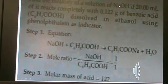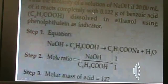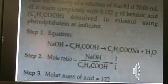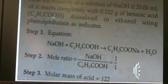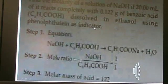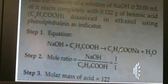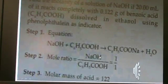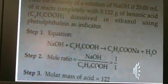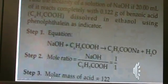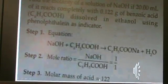Find the molarity of solution of NaOH if 20 mL of it reacts completely with 0.122 g of benzoic acid, C6H5COOH, dissolved in ethanol using phenolphthalein as indicator. First, we write down the equation: NaOH plus C6H5COOH equals C6H5COONa plus H2O. Then we find the mole ratio, NaOH plus C6H5COOH, 1 to 1 ratio, and molar mass of the acid is equal to 122.